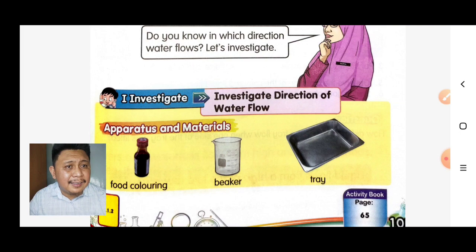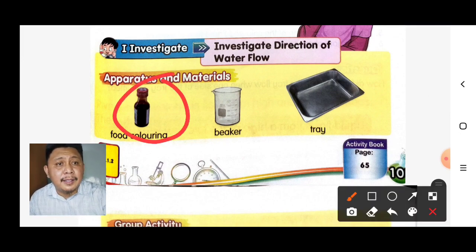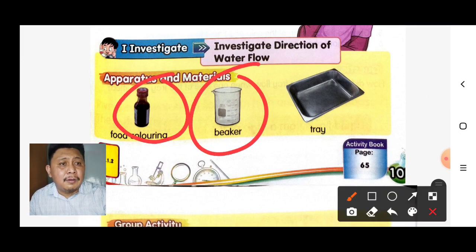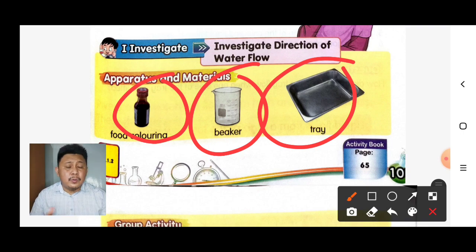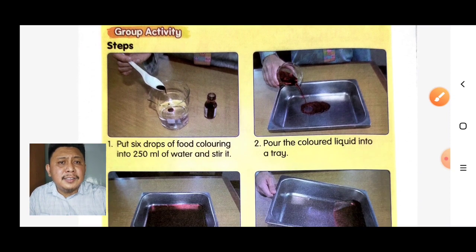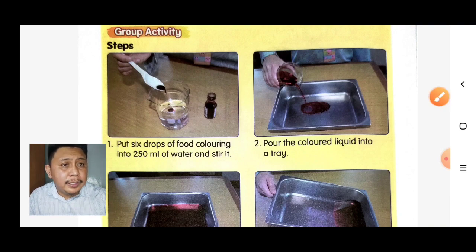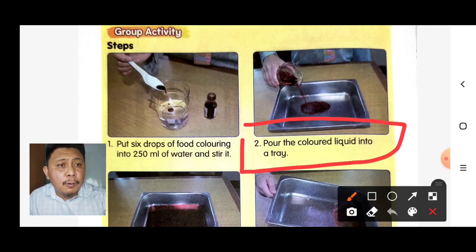This investigation is to find out the direction of water flow. What do you need? You need food coloring, a beaker, and a tray. You can do this at home with your parents. Step one: put six drops of food coloring into 250 ml of water and stir it. Step two: put the colored liquid into the tray.